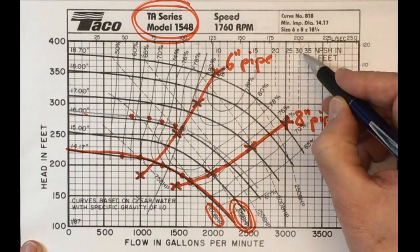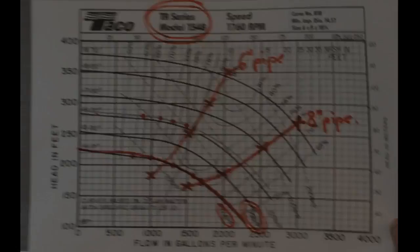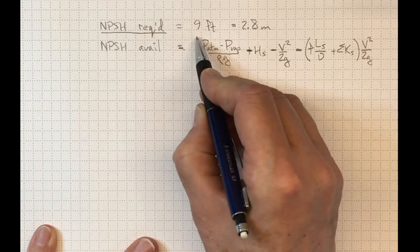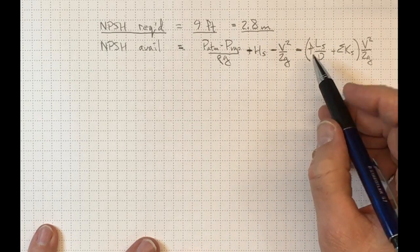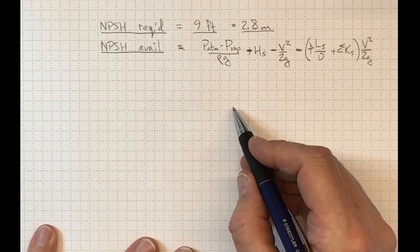So a fairly low requirement to avoid cavitation. It could go much higher, say around 35, if we're going to really high flow rates and velocities. So if our NPSH required is 9 feet, or 2.8 meters of head, then we can calculate the NPSH available and see if we make it.